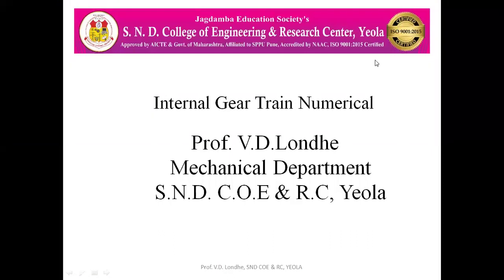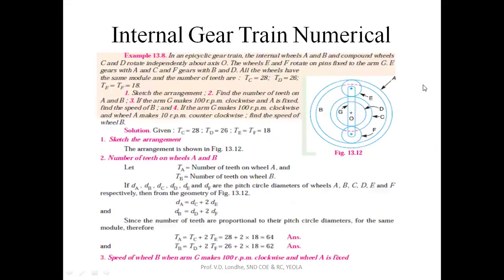Hello everyone. Today we are going to see the numericals on internal gear train. The first numerical is here. In an epicyclic gear train, there are two internal wheels, A and B.